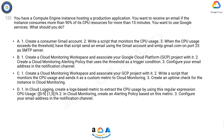Option D: 1) In Cloud Logging, create a logs-based metric to extract the CPU usage by using this regular expression: cpu_usage [0-9]{1,3} percent. 2) In Cloud Monitoring, create an alerting policy based on this metric. 3) Configure your email address in the notification channel.